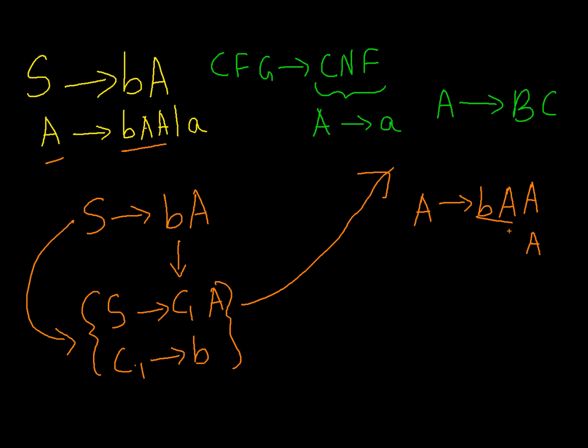Instead of this I will replace this with another symbol, let's say C2. So I have symbol A produces C2A, and this is in Chomsky normal form where C2 produces terminal b and symbol A.